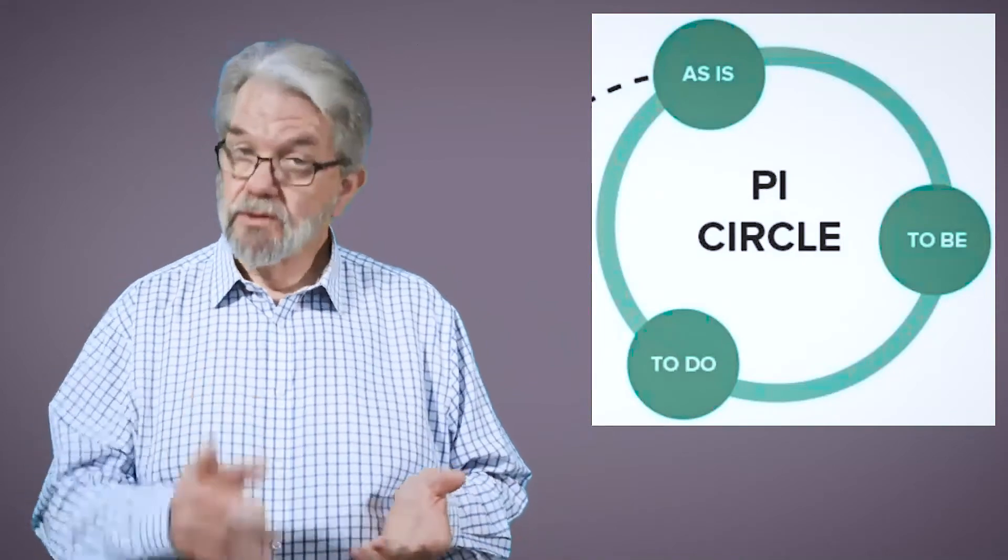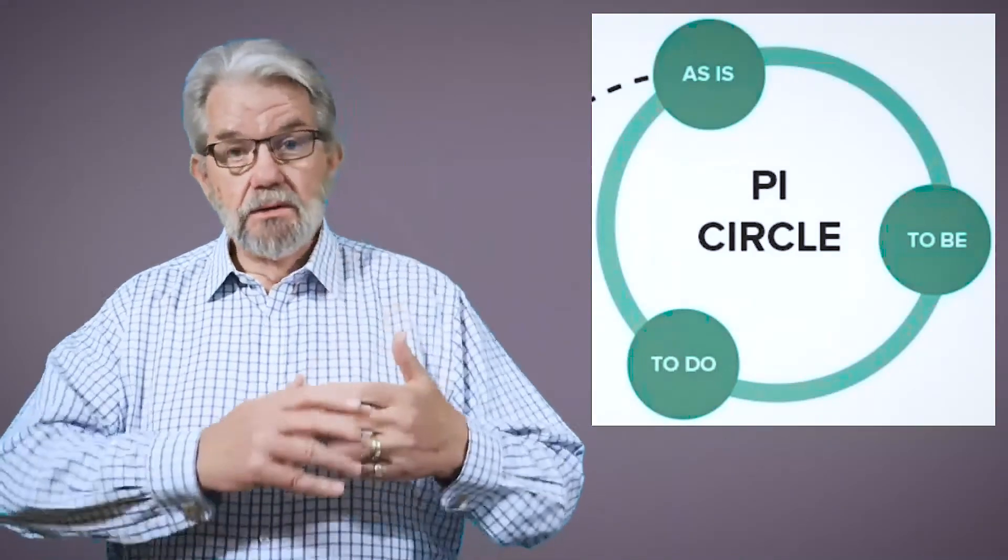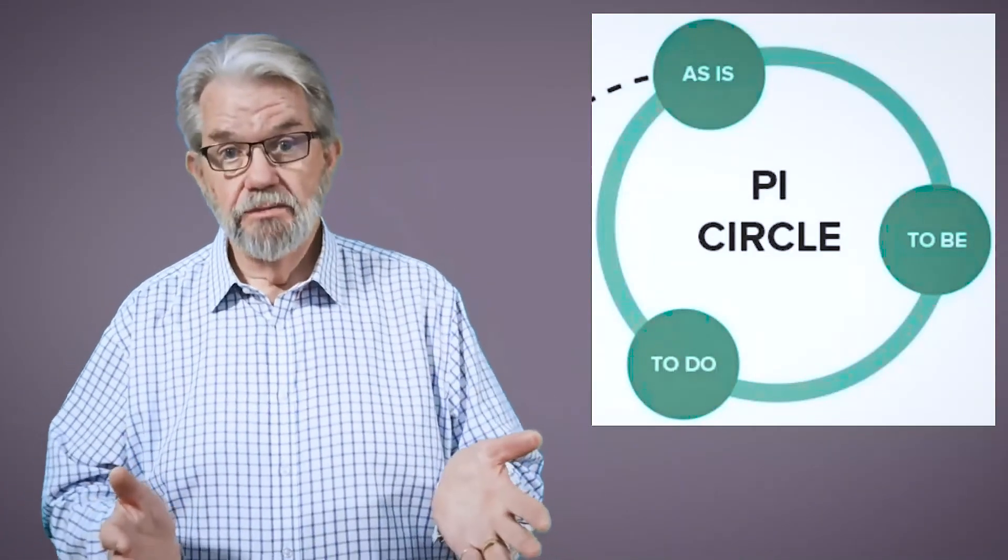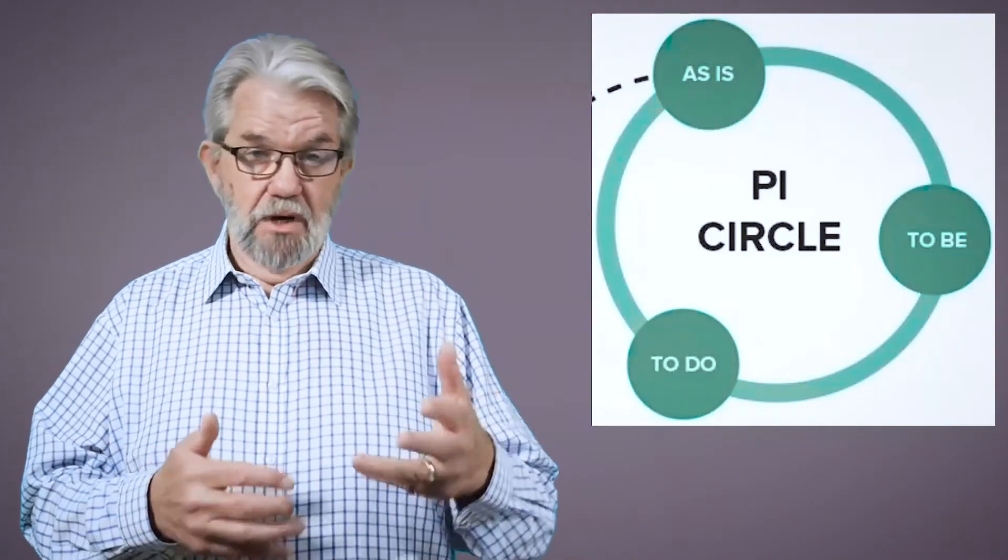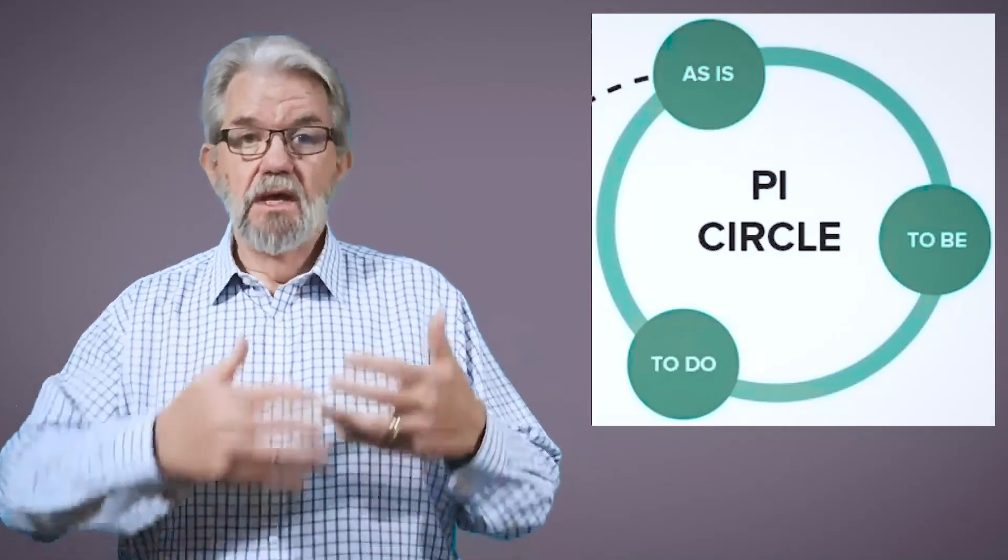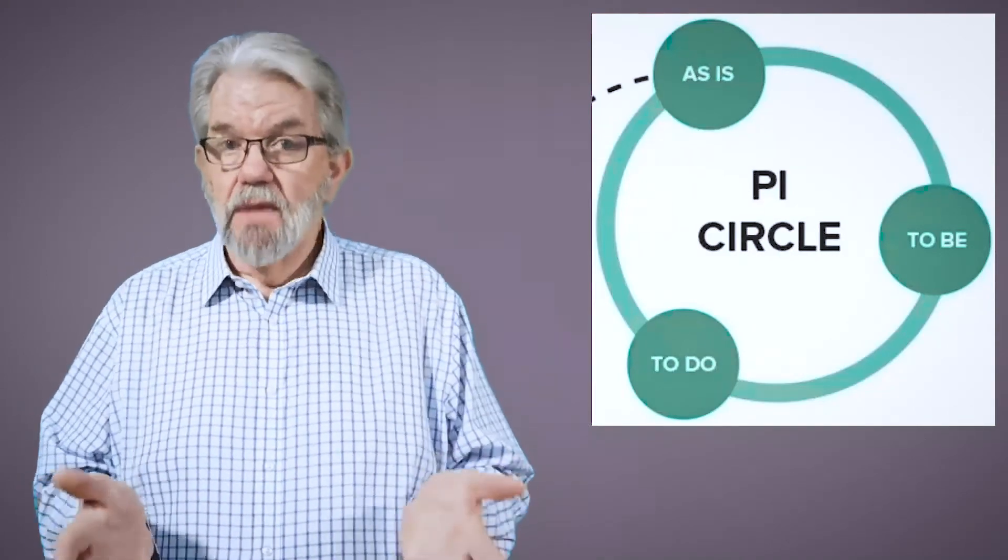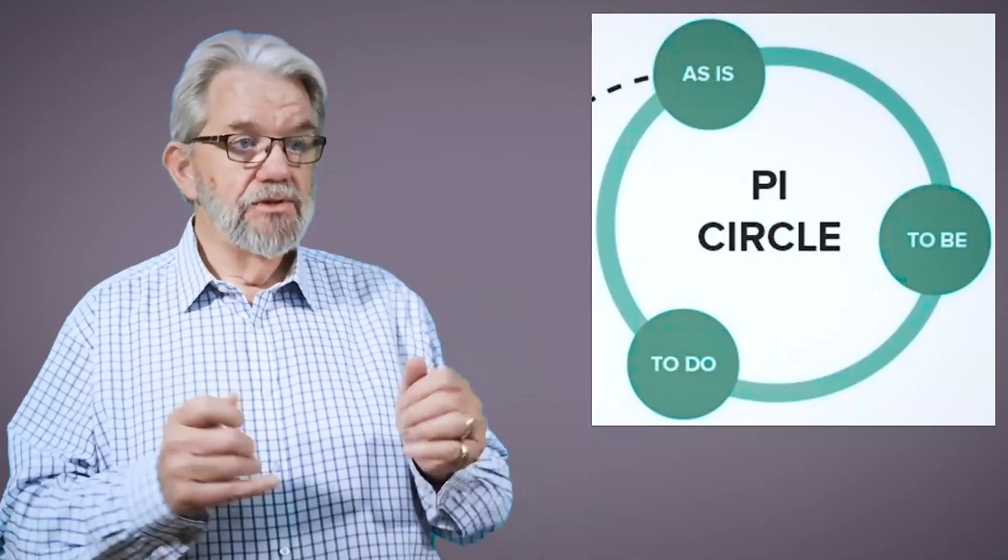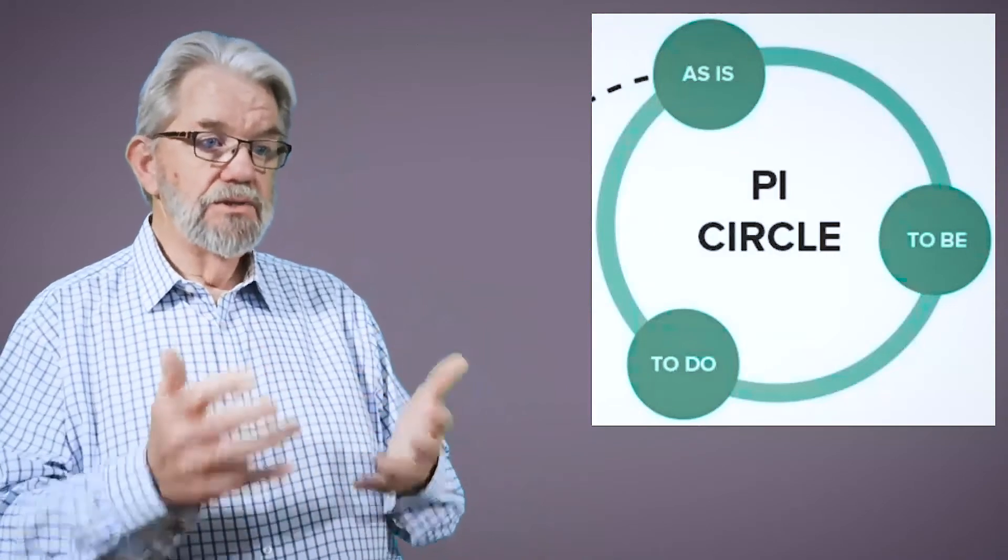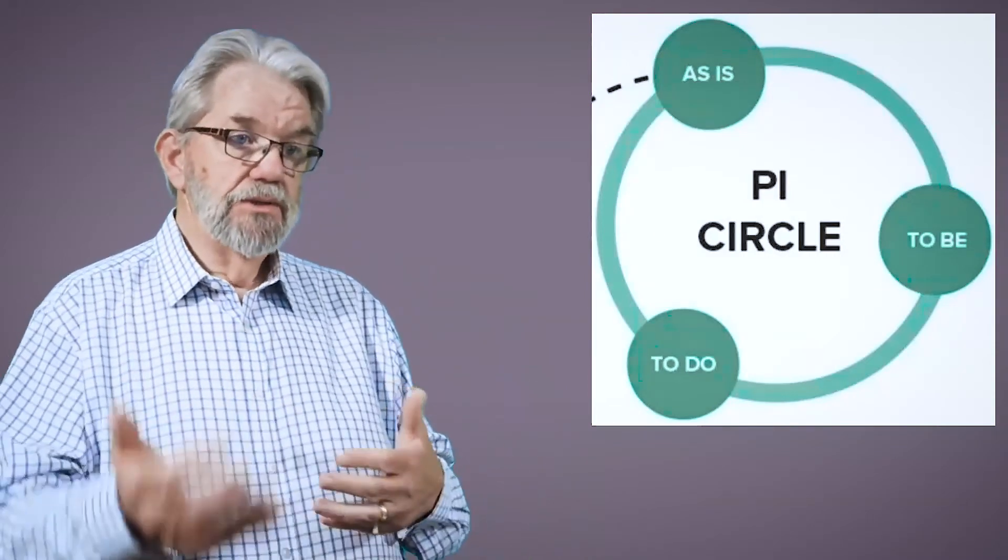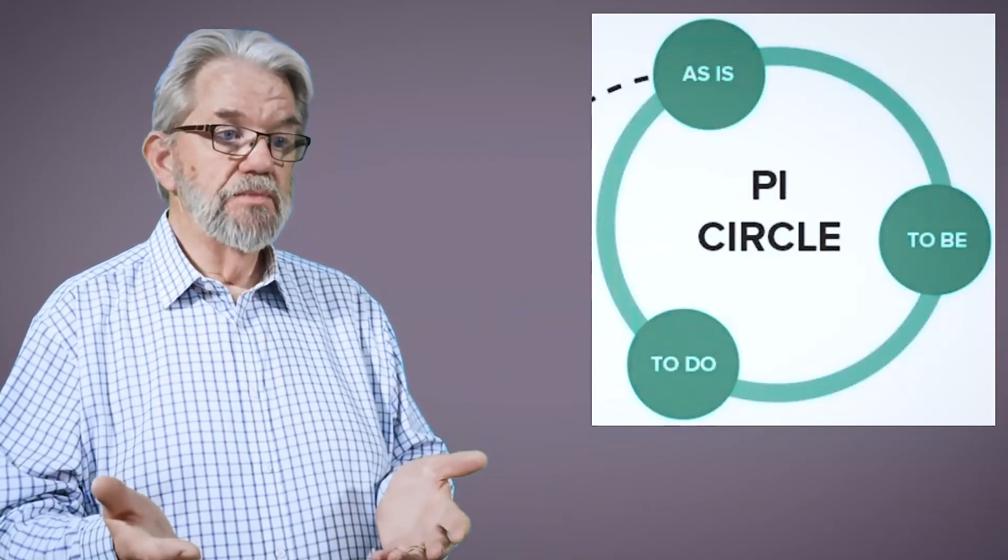Okay. So here we are at the PI process improvement circle. Now, this is anybody's process improvement methodology. This might be Sprint PIP. It might be DMAIC. It might be Lean Six Sigma. It might be something you've made up. It doesn't matter. It's shown here in its most generic form, as is 2B2Do. So, as is, current state, 2B, the future state. What do we want it to be?